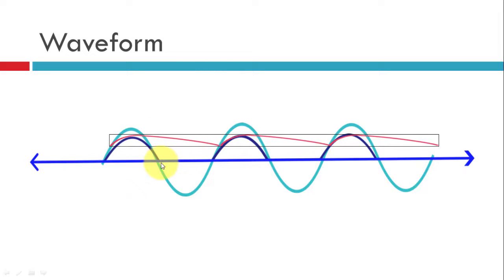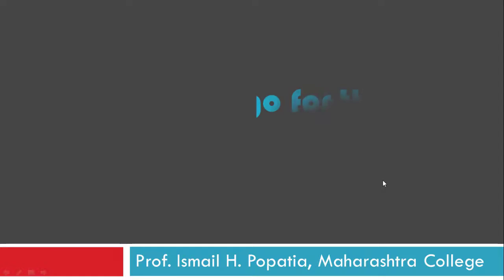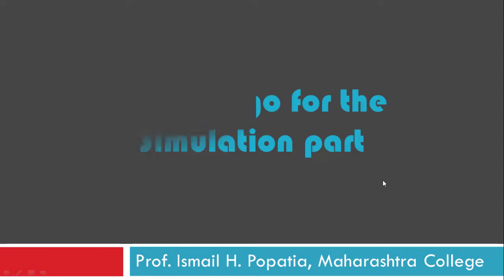When it goes into the negative cycle, the capacitor discharges, because of which the voltage is retained and it doesn't fall to zero. You can make the difference between this blue wave and the red wave. The red wave actually shows the capacitor action — it clears those particular ripples to some extent. So we don't get a pure DC but it is almost close to a pure DC. That's how this particular circuit works.